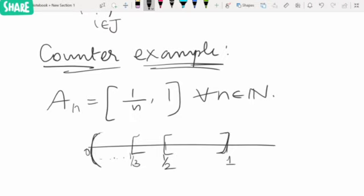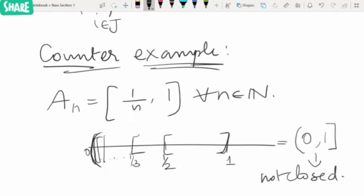it will not include 0. So the union will be (0, 1], which is not a closed set. Therefore, arbitrary union may or may not be a closed set.